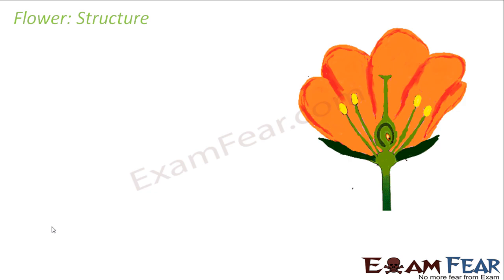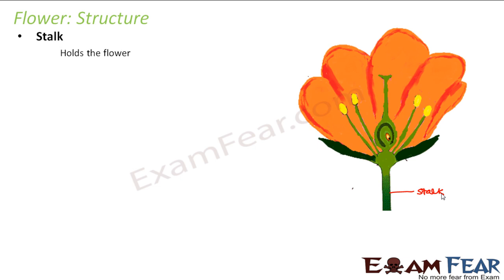We have considered here a basic diagram of a flower. Any flower will have more or less the same structures, just with a slightly different appearance. The first part is the stalk — the tube-like structure which actually holds the flower. Its purpose is to hold the flower and act as the base for it.